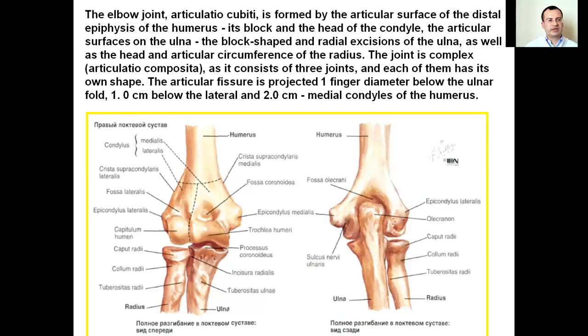The elbow joint is formed by the articular surface of the distal epiphysis of the humerus — its trochlea and capitulum — the articular surfaces on the ulna (the trochlear and radial notches), and the head and articular circumference of the radius. The joint is complex, consisting of three joints each with its own shape. The articular fissure is projected one finger diameter below the ulnar fold, one centimeter below the lateral and two centimeters medial to the condyles of the humerus.